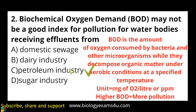The unit of BOD is mg of oxygen per liter, or parts per million. Higher the BOD, higher the pollution. Clean rivers have a BOD of 1 mg/L, moderately polluted rivers range from 2 to 8 mg/L, and beyond 8 mg/L a river is considered highly polluted.